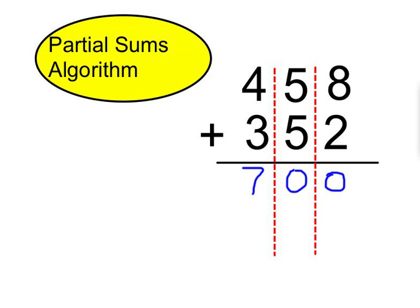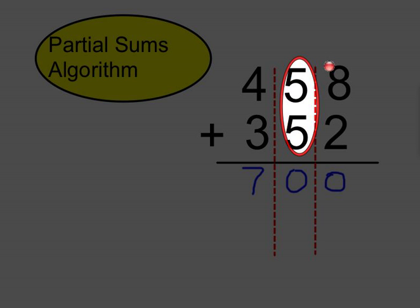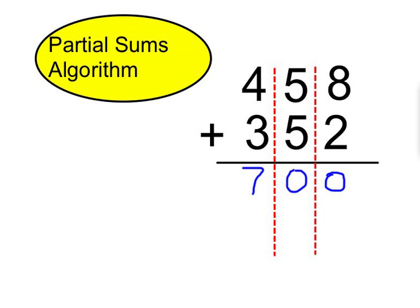Then they would go to the next smallest place value spot which is the tens. So we would be thinking about what 50 plus 50 is which is 100. And here the students need to keep all of their place values lined up. So the one needs to go in the hundreds place, keep everything lined up, 100.